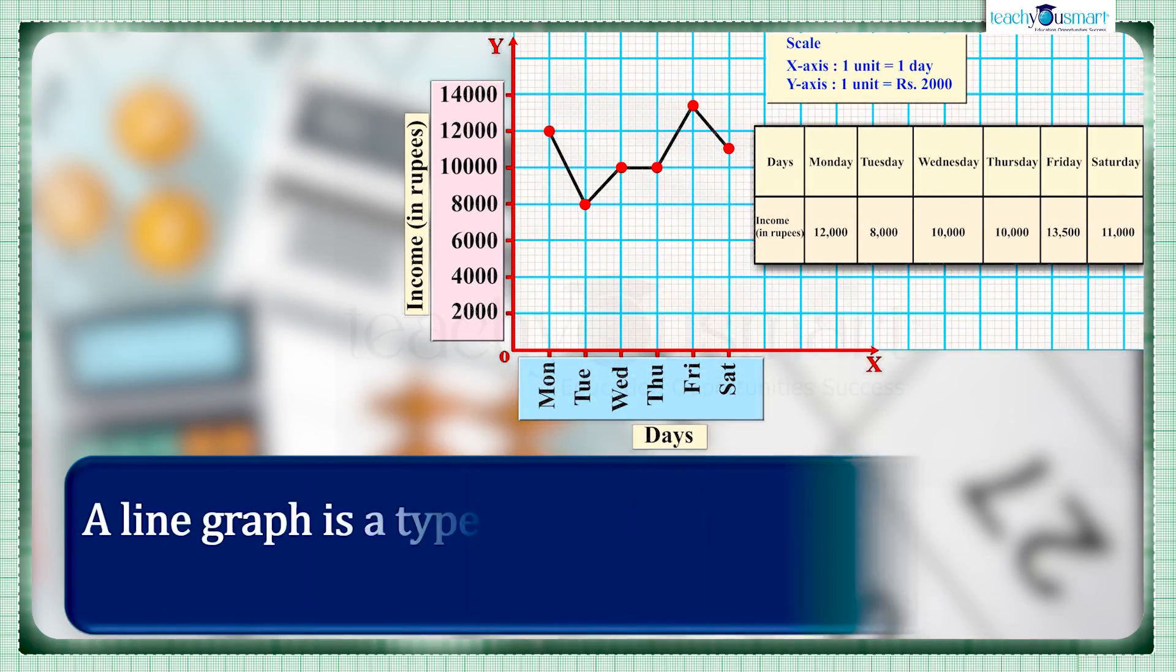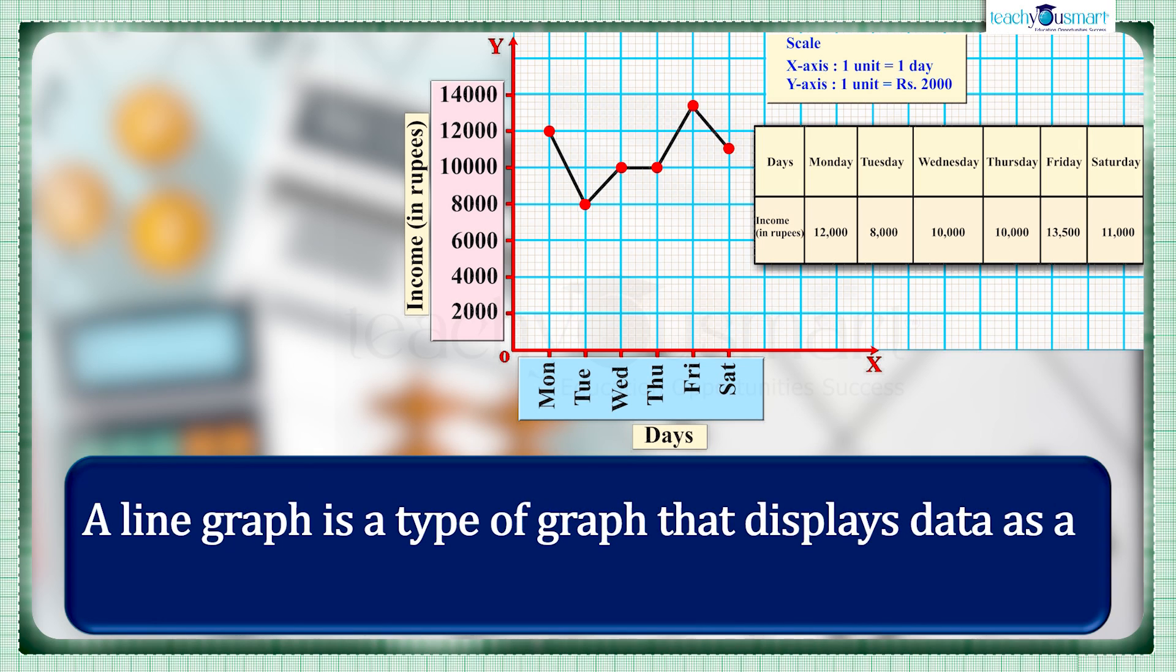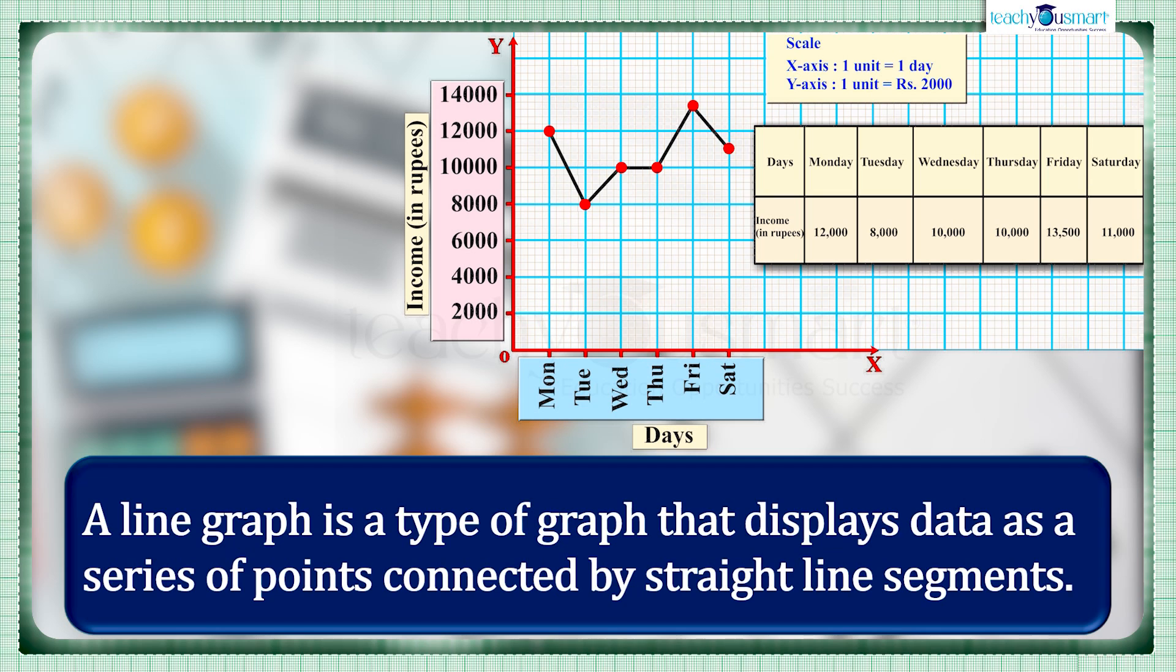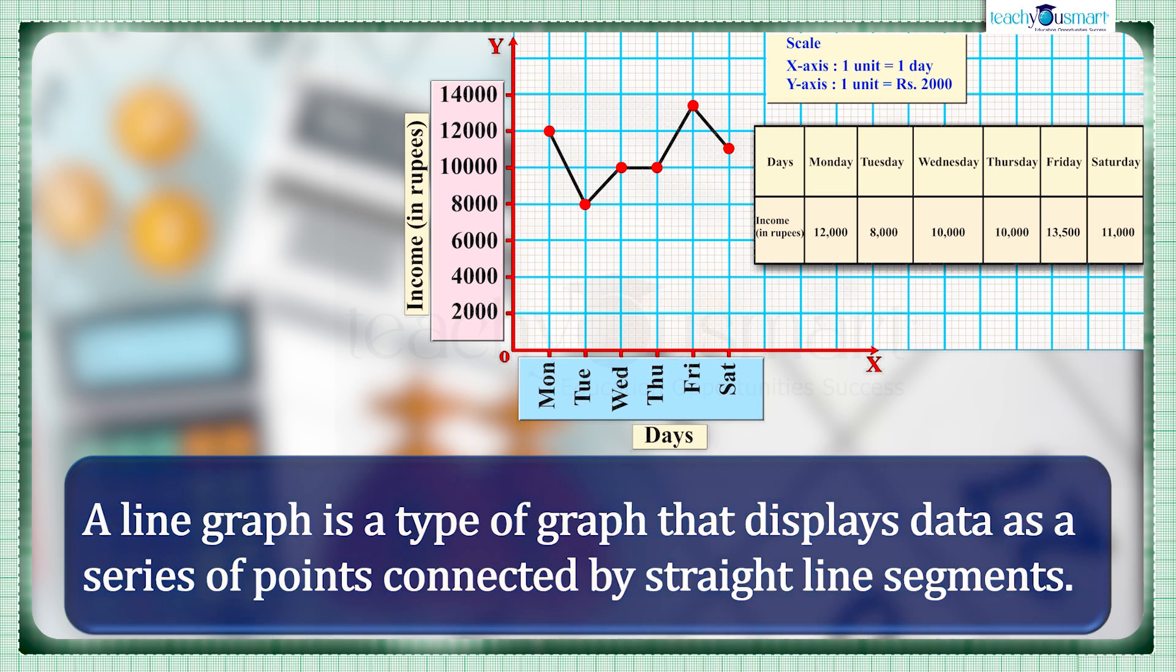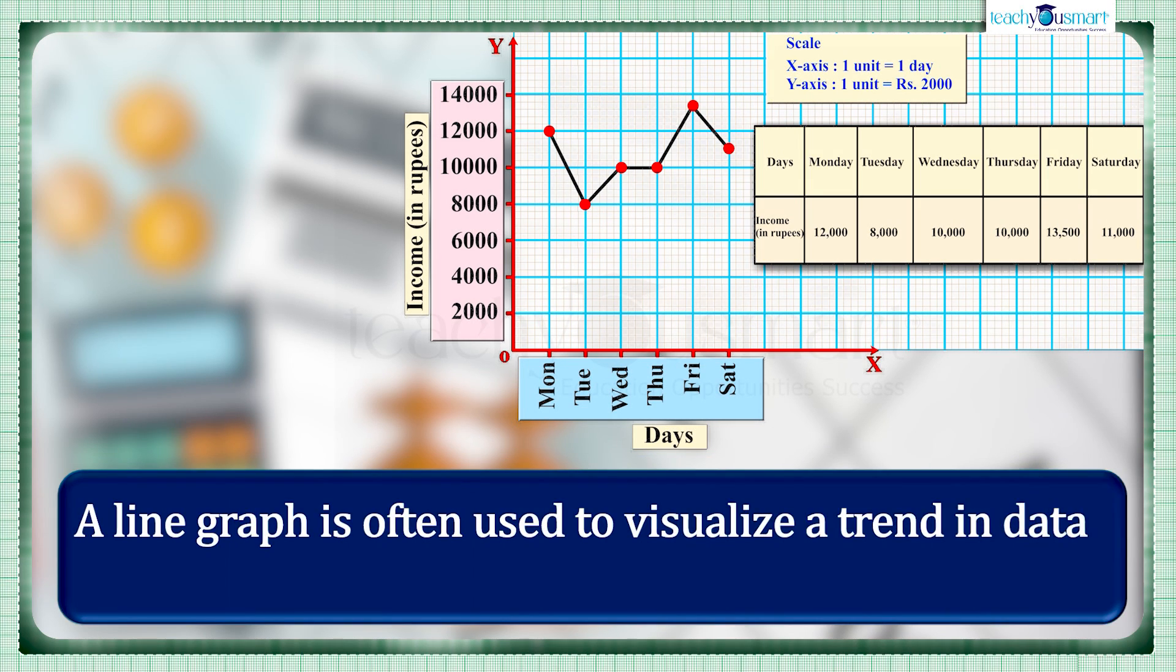That is, a line graph is a type of graph that displays data as a series of points connected by straight line segments. A line graph is often used to visualize a trend in data over time intervals.